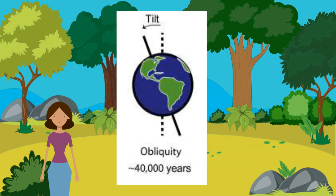2. Obliquity, or tilt — the tilt of the earth's axis changes from 21.5 to 24.5 degrees; it is currently 23.5 degrees. This affects the contrast between summer and winter seasons. To change between 21.5 and 24.5 degrees takes around 41,000 years.